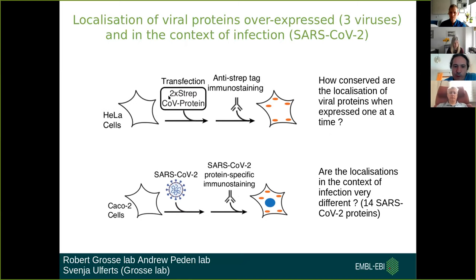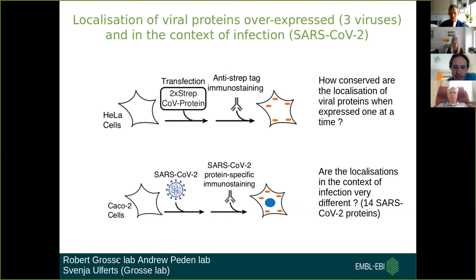There were two types of localization studies done for the three viruses. Each viral protein was expressed with a strep tag and visualized inside the host cell in HeLa cells. For 14 of the SARS-CoV-2 proteins, we were able to use antibodies to look in the context of infection where the protein is. This allows us to say how different the localization of the singly expressed protein is versus the protein in the context of infection — work done by the Bhogross lab and Andrew Pendens lab.